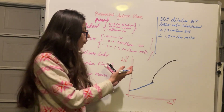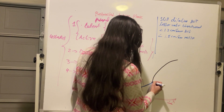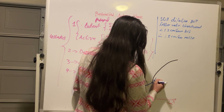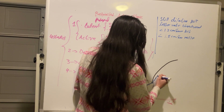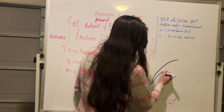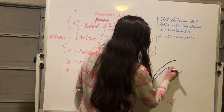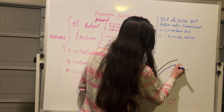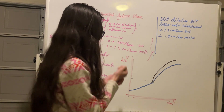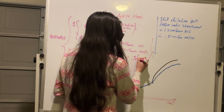With prolonged or protracted active phase, the latent phase is normal up to 6 centimeters of dilation. Then the active phase starts, but it is slower than normal — we still have a faster rate of cervical dilation compared to the latent phase, just slower than what is expected for a normal active phase.